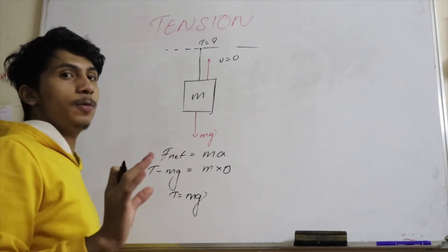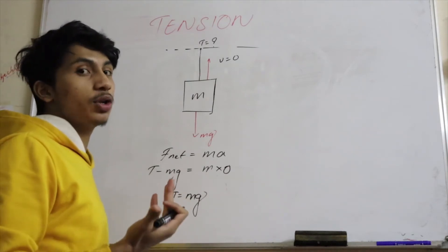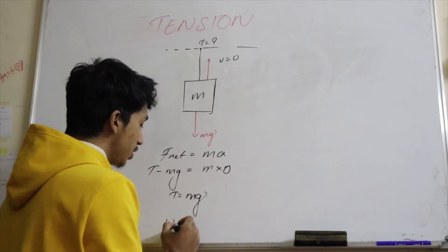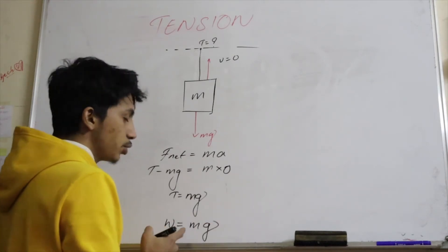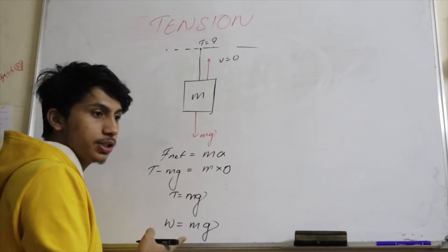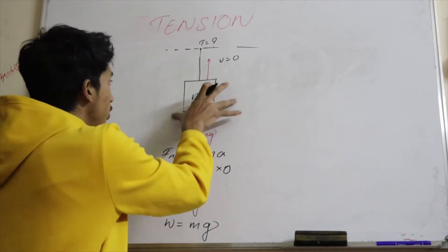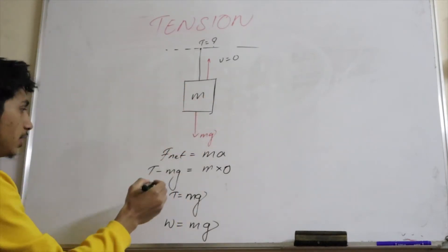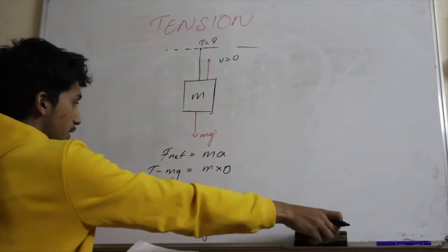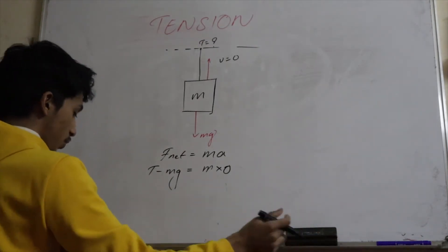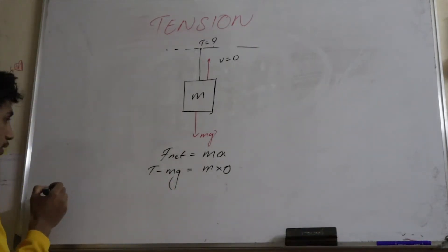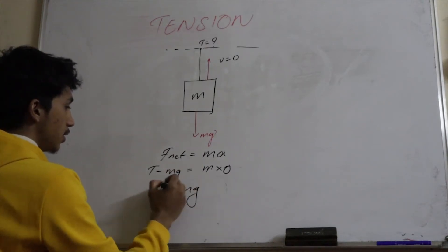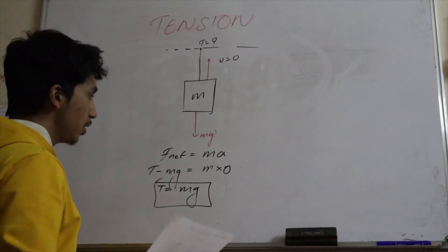So T equals mg. When the velocity is zero, the tension will always equal its weight. Weight is equal to mass times acceleration due to gravity. So this is the first condition of tension — T equals mg.